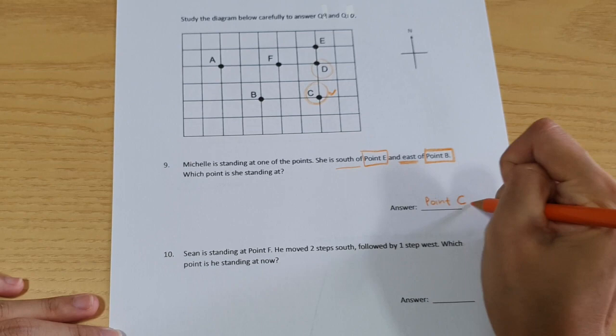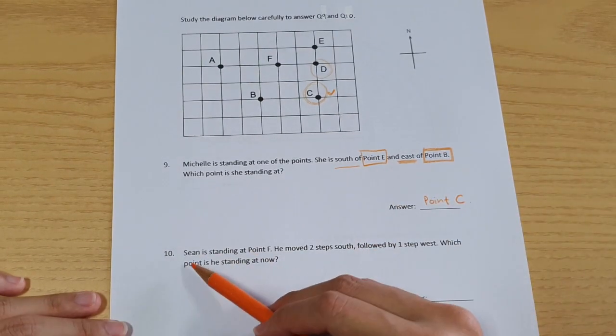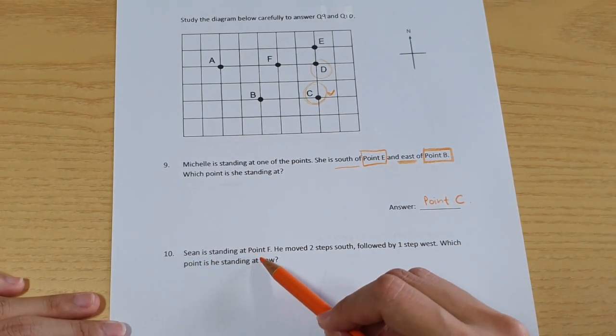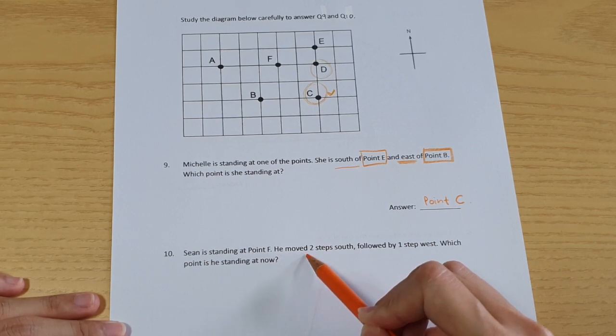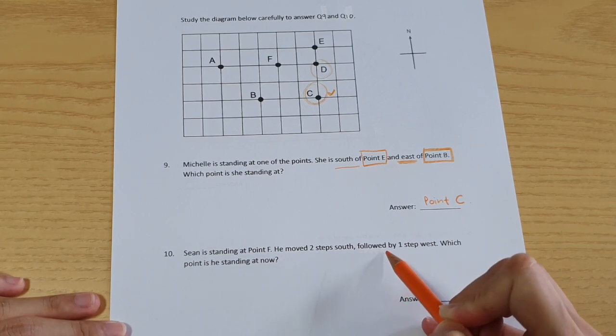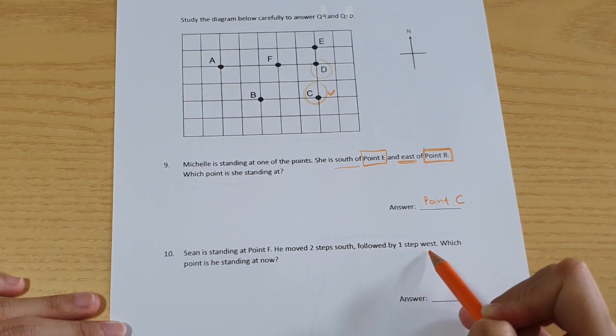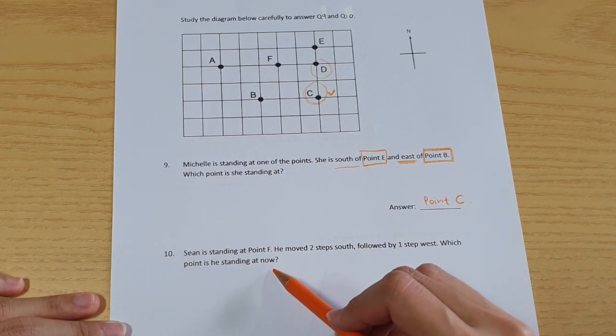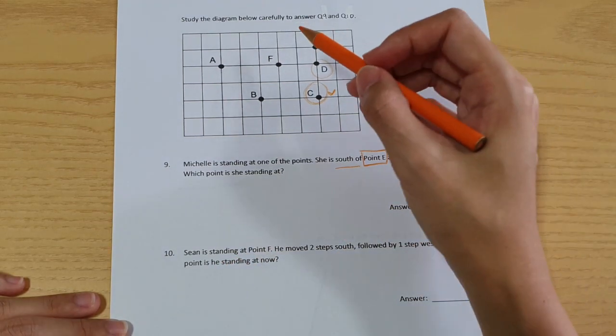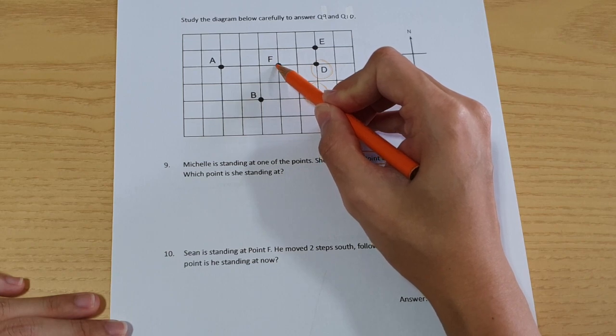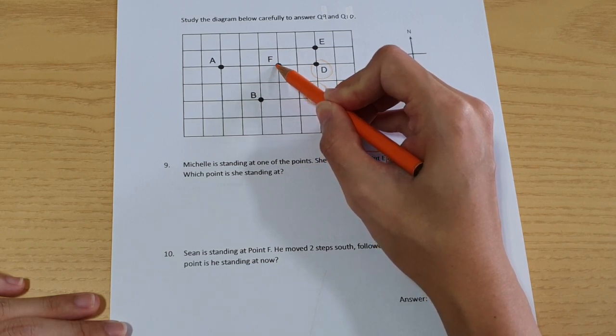Question number 10. Sean is standing at point F. He moved two steps south, followed by one step west. Which point is he standing at now? Sean was standing at point F. He moved two steps south.